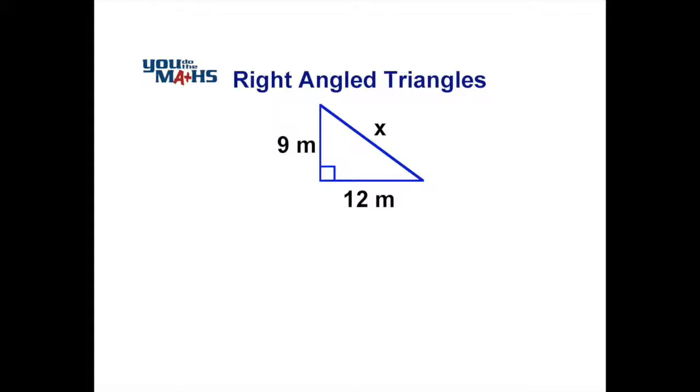We then write down the rule, which is always the hypotenuse squared, or in this case x squared, is equal to the other two sides squared added together.